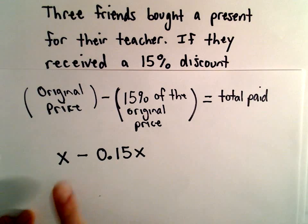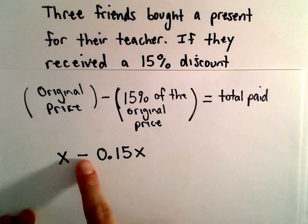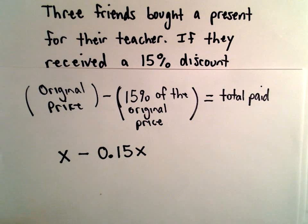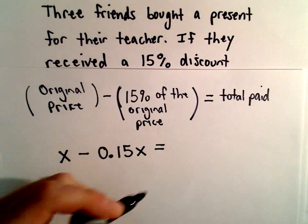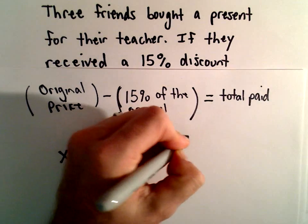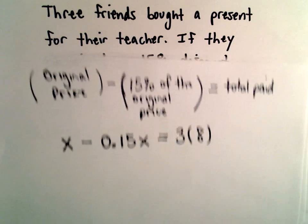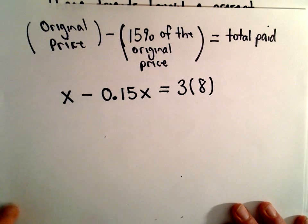So we have the original price minus 15% of the original price. That's going to equal the total paid. Well, there were three friends and they each kicked in 8 bucks. So now we have an equation set up that we need to solve.